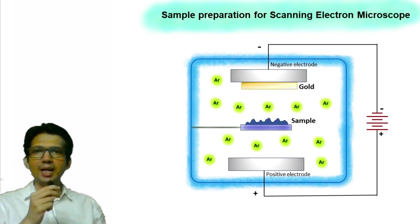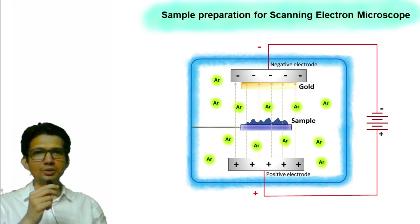Then argon gas at low pressure is introduced in the chamber. When high voltage potential difference is applied across the electrodes, because of the strong electric field, the argon atoms get ionized to form argon ions.